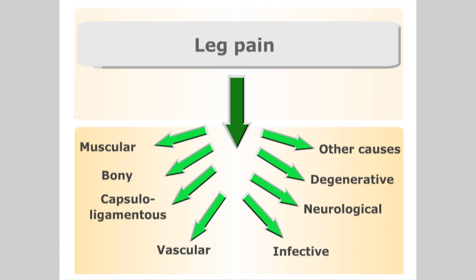The etiologies would include muscular, bony, capsuloligamentous, vascular, infective, neurological, degenerative, and other causes. In fact, at this stage, without any further information or tests, we might end up including the whole of the pathological sieve.